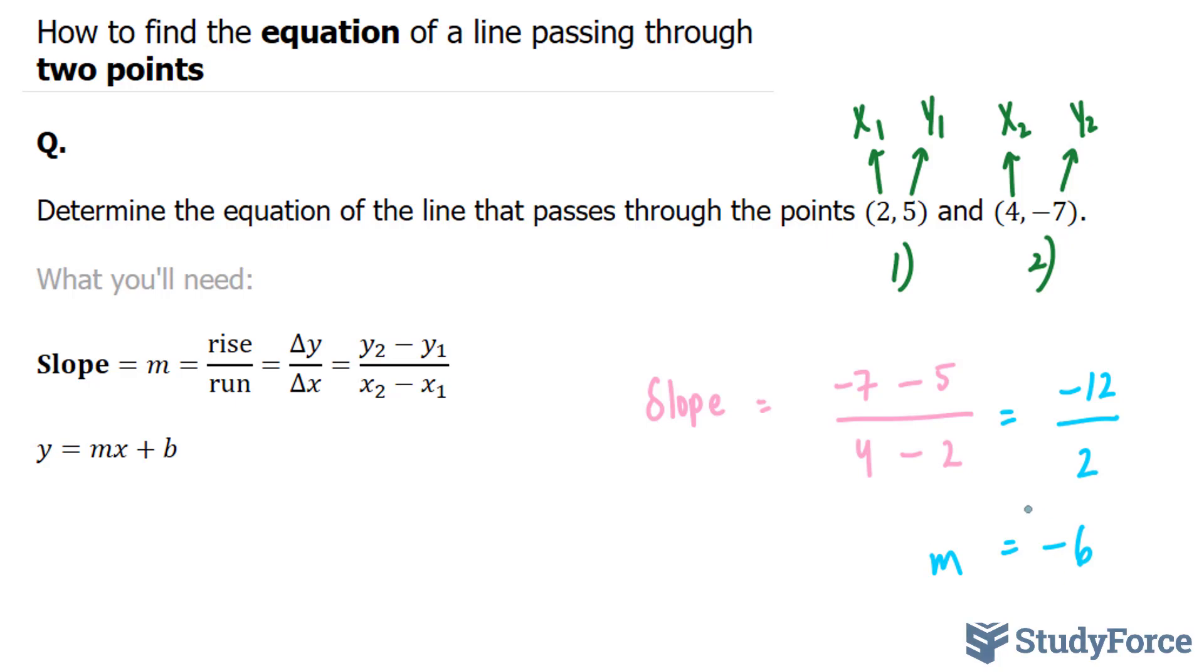The next step is to replace negative six into this formula. So we end up with y equals negative six x plus b.